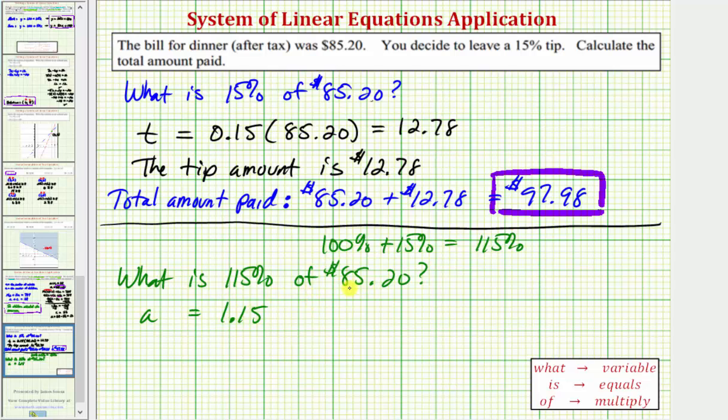And again, we have of 85 dollars and 20 cents, so we're going to multiply by 85.2, which we want point two zero.